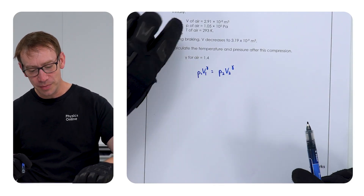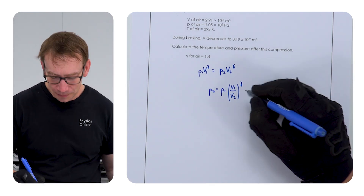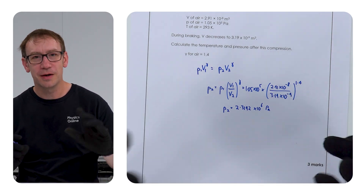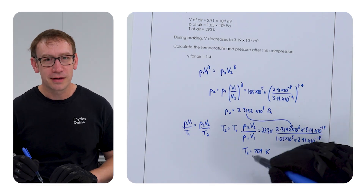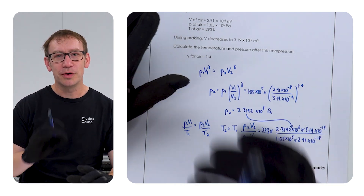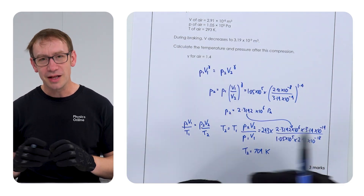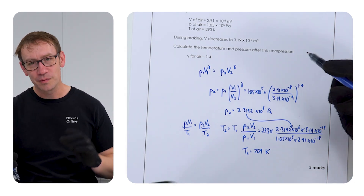In the exam you don't know which marks are AO1, AO2 or AO3 — you just look at the marks — but if you look in the mark scheme it does say how marks are allocated. The first thing is to write down the equation, then we know P1, V1 and V2, and we're finding the new pressure. Rearranging and putting in the numbers gives a new pressure of 2.3 × 10⁶ pascals. For the temperature, the final value is 709 Kelvin, or 7.1 × 10² Kelvin. You write down the equation, rearrange it, put in the numbers, and give your final answer to an appropriate number of significant figures.